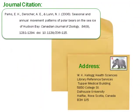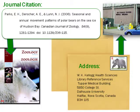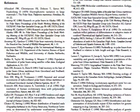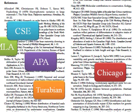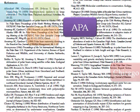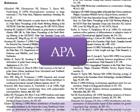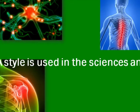A journal article citation is like an address. The citation provides key elements to help you identify the location of an article. Citations can be created in a variety of different styles depending on the academic subject area. The APA style was created by the American Psychological Association and is used by scholars and students in the sciences and social sciences.